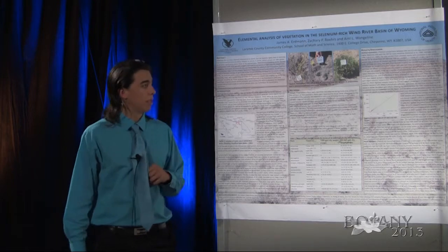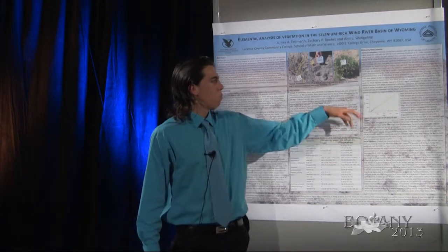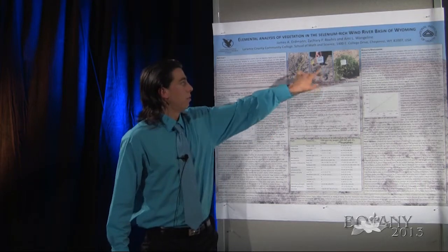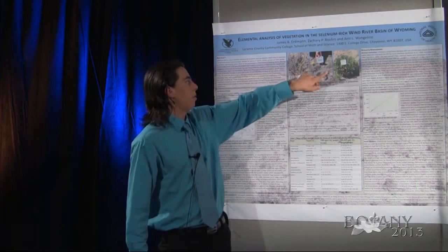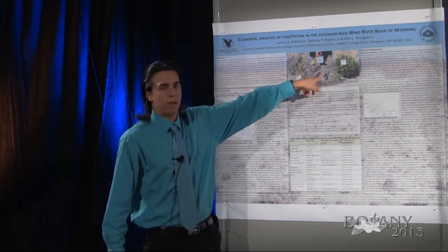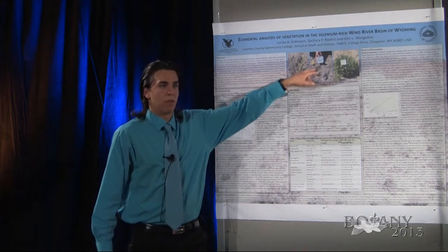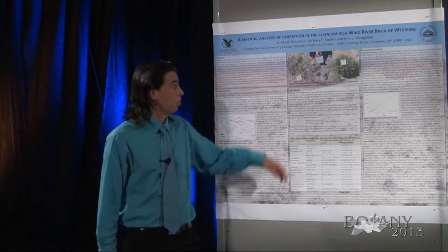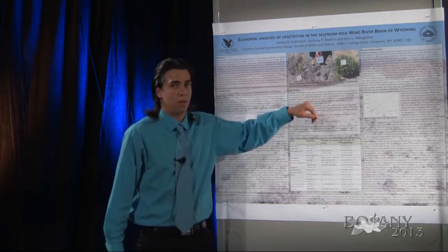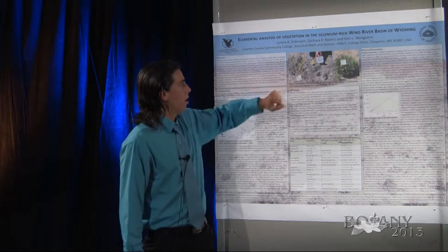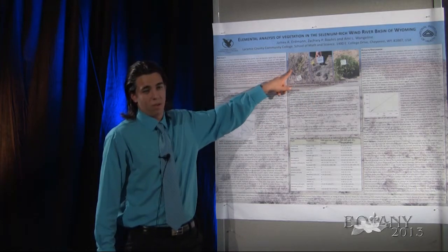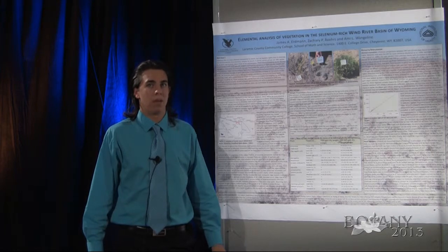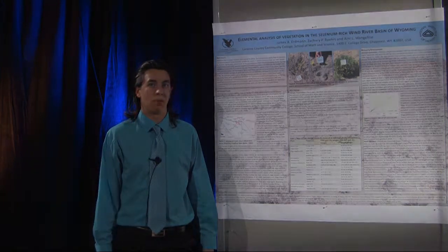We see some other interesting results from our non-accumulators and accumulators. Opuntia is a non-accumulator, and it's got similar levels of selenium to another species that has been looked at. Artemisia has only been studied one other time for selenium, and it's showing much higher levels than were previously known.